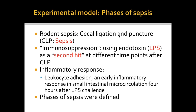Moving from cell data to rodent data: we made mice septic using cecal ligation and puncture (CLP) — essentially fecal peritonitis. To test immunosuppression as we did with cells, we gave lipopolysaccharide as a second hit to the entire mouse via intraperitoneal injection at different time points. Unlike the clinical scenario, here we know exactly when CLP was performed, so we can time the phases correctly. We then looked at the inflammatory response by measuring leukocyte adhesion in the microvasculature.